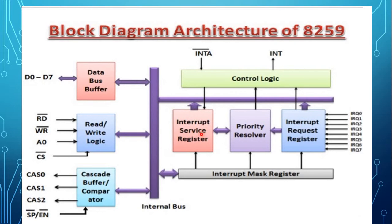The in-service register ISR stores all interrupt levels currently being serviced. Each bit of this register is set by the priority resolver and reset by the end-of-interrupt command word. The priority resolver examines the interrupt request register and determines whether the interrupt signal should be sent to the microprocessor or not. The cascade buffer or comparator generates control signals necessary for cascaded operation and buffer enable signals. It is used to expand the number of interrupt levels by cascading two or more 8259s.